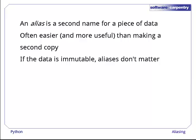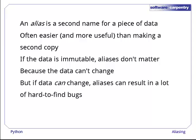If the data in question is immutable, i.e. if it cannot be modified in place, then aliasing doesn't matter, because if the data can't change, it doesn't make a difference how many times it's referred to. But if data can change in place, then aliasing can lead to some hard-to-find bugs.